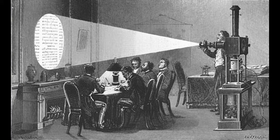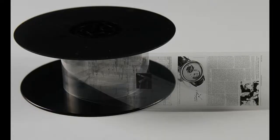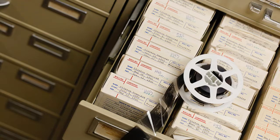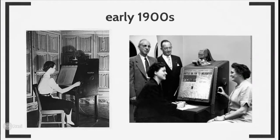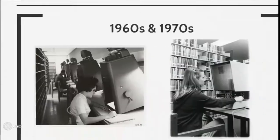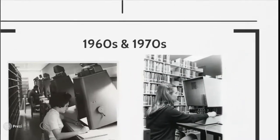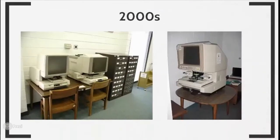Microfilm was invented in 1859 and is simply film containing micro photographs of printed material, such as newspapers or city directories. The film is read by using a reader or scanner, and these readers have changed significantly in the last 100 years.